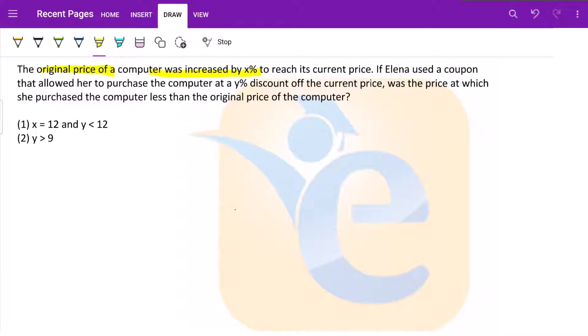The original price of a computer was increased by X percent to reach its current price. So let us imagine a number line. This was its original price. It was increased by X percent. So we reached this point.